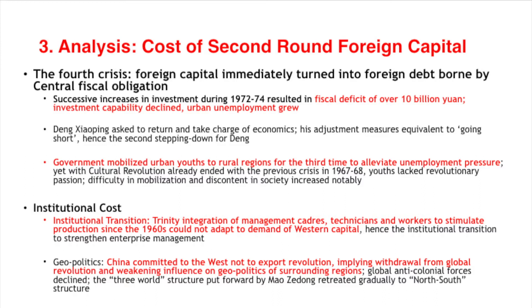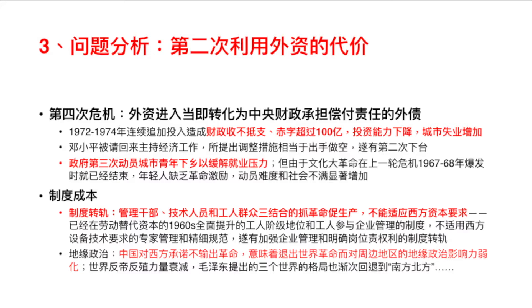The second institutional cost is geopolitics. At that time, China did not formally sign a commitment, but through negotiations had a de facto commitment to retreat from the world revolution and not export any fighting weapons. This had much impact on geopolitical influence in Southeast Asia and South Asia. Since the late 1970s and beginning of the 1980s, China was less influential in the world revolutionary alliance.